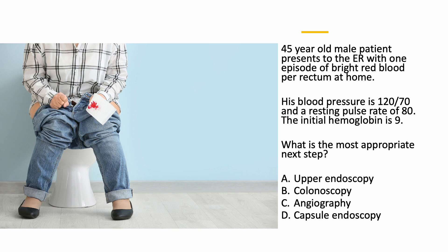A 45-year-old male patient presents to the ER with one episode of bright red blood per rectum at home. His blood pressure is 120 over 70 and a resting pulse rate of 80. The initial hemoglobin is 9. What is the most appropriate next step: upper endoscopy, colonoscopy, angiography, or capsule endoscopy? Colonoscopy is the recommended initial diagnostic test in a patient who presents with hematochezia and is hemodynamically stable.